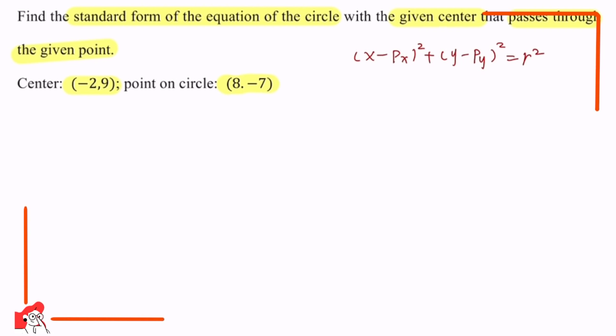Now you have enough of an idea to solve this question — if you like, pause the video and try by yourself. Now let's do this step by step. We know the center point is (−2, 9) and the point on the circle is (8, −7), so the standard form becomes: (x + 2)² + (y − 9)² = r².